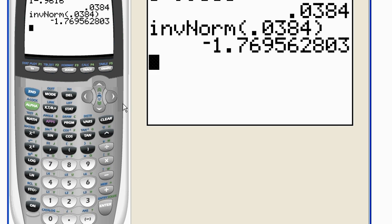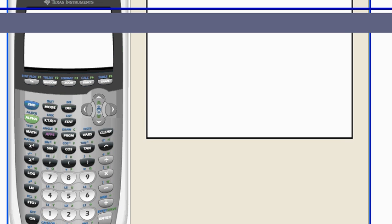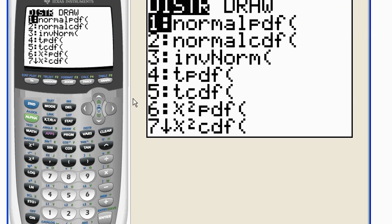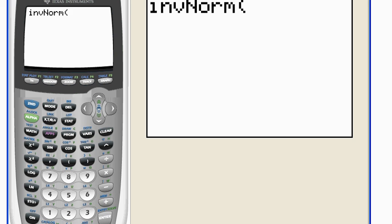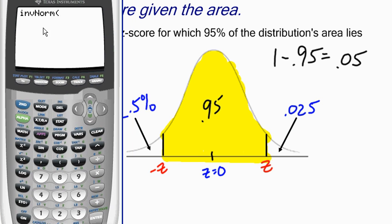I'm going to pull up my calculator and use the function called inverse norm. I go second, vars, and down to number 3, inverse norm. The calculator always assumes the number you give it is the area to the left of the z-score you want.